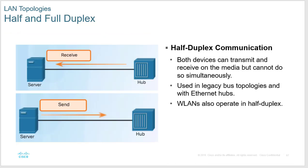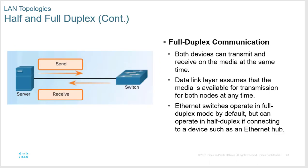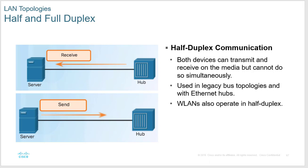Half duplex is like a walkie-talkie — you can send and receive but only one at a time. Full duplex is like a phone call — you can send and receive simultaneously. With half duplex you have to worry about collisions: if you're sending while someone else sends, those packets may collide. By default, when you plug a device into a Cisco switch, Cisco tries to negotiate full duplex; if that fails it reverts to half duplex, so you need to check.